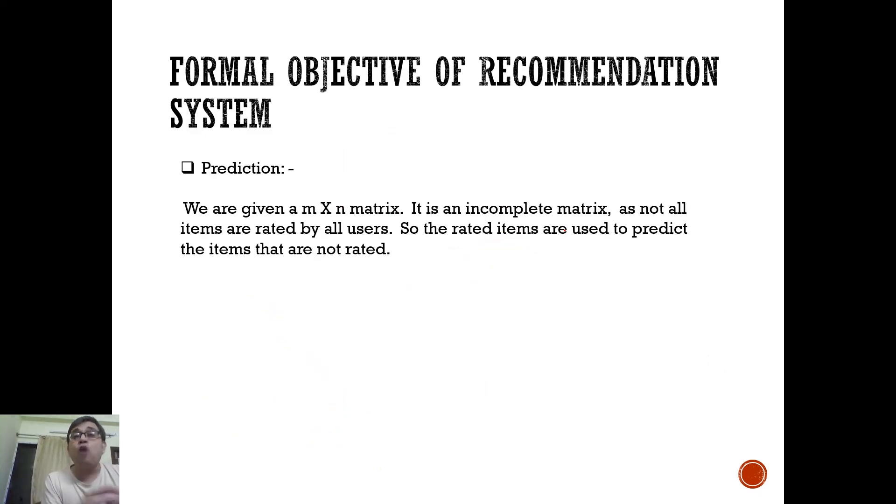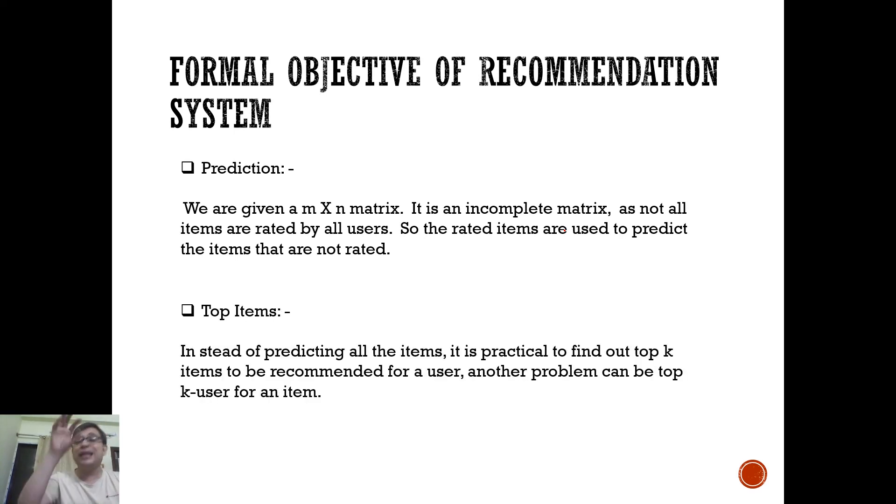Now, let's look at the formal objective of a recommendation system. So we are given a m into n matrix. You have m users and n products. So it's an incomplete matrix because not all items are rated by all users. So the rated items are now used to predict the items that are not rated. So this is one of the broad goals of recommendation system. So filling the gaps.